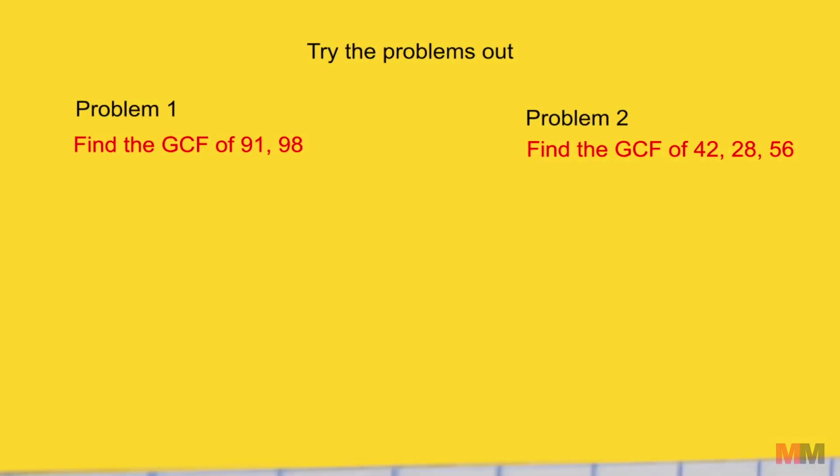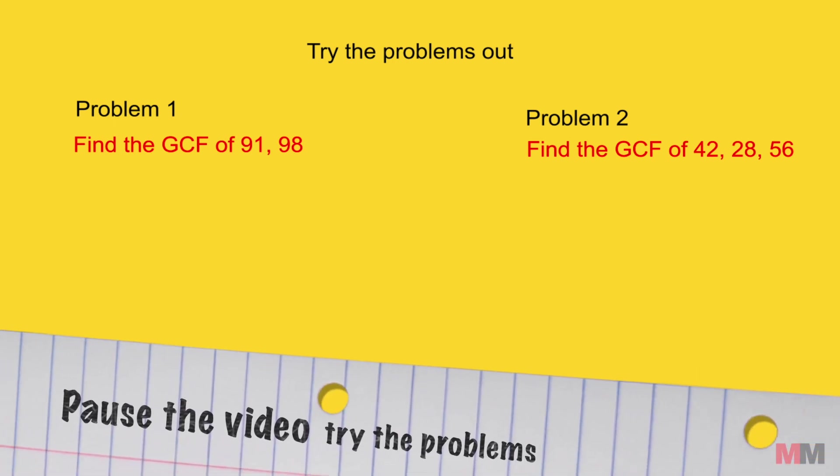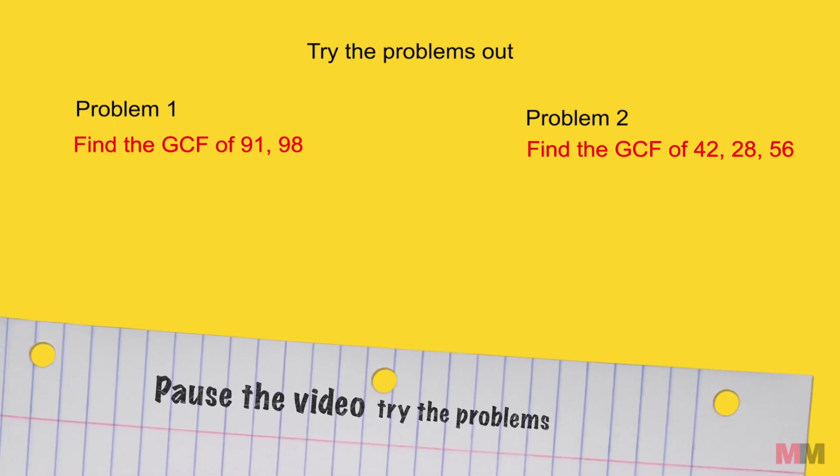So let's test it out. Let's see if you remember the keystrokes. Try these two problems out on your own. Find the greatest common factor or divisor of 91, 98, and for problem two, try it with three numbers: 42, 28 and 56. When you are done, unpause that video and I'm pretty confident that you'll have the right answer.